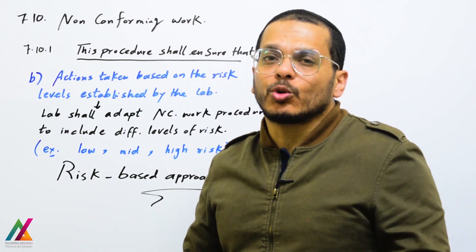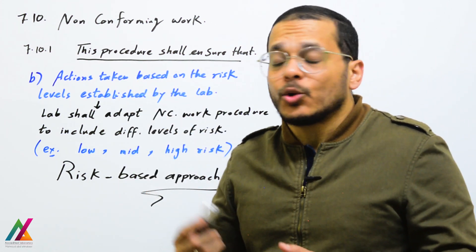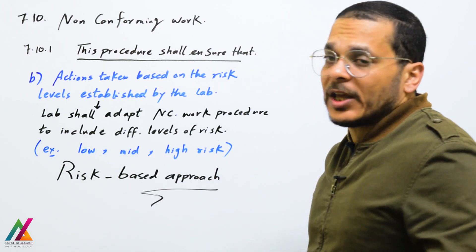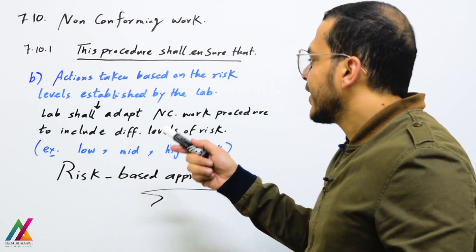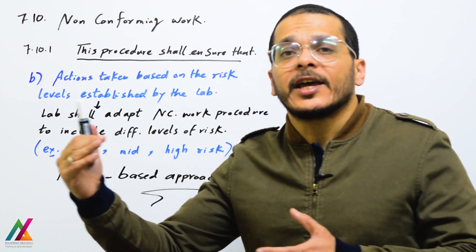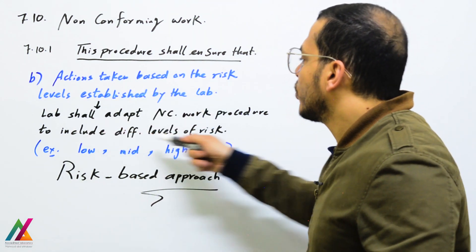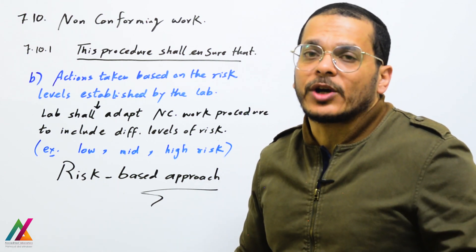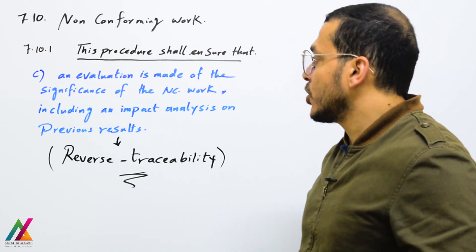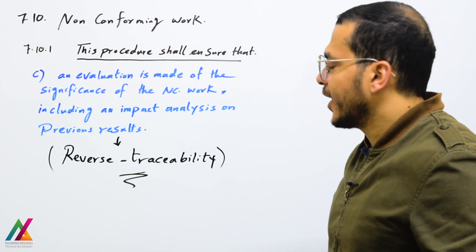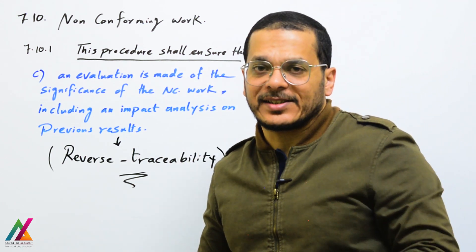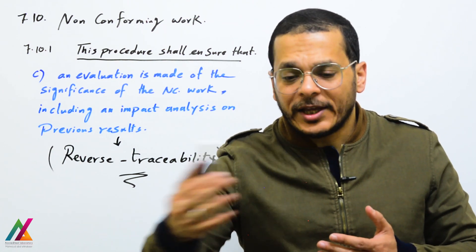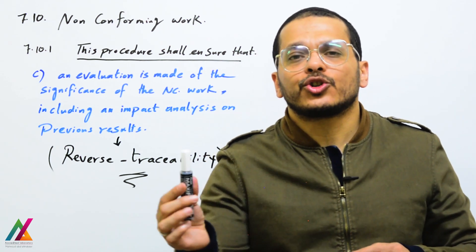Because the risk-based approach is newly added to this edition, it is a valid point to add to this procedure. Actions taken will be based on the risk levels established by the lab. The lab shall adapt the non-conforming work procedure to include different levels of risk — low, mid, or high — and take action based on risk type. Additionally, an evaluation shall be made of the significance of non-conforming work, including an impact analysis on previous results, which is called reverse traceability.